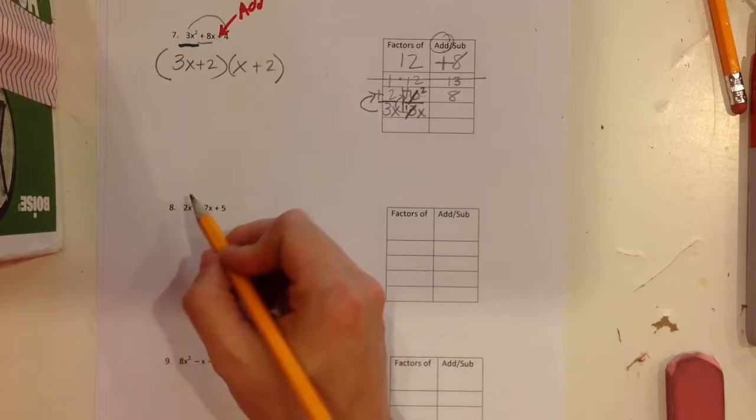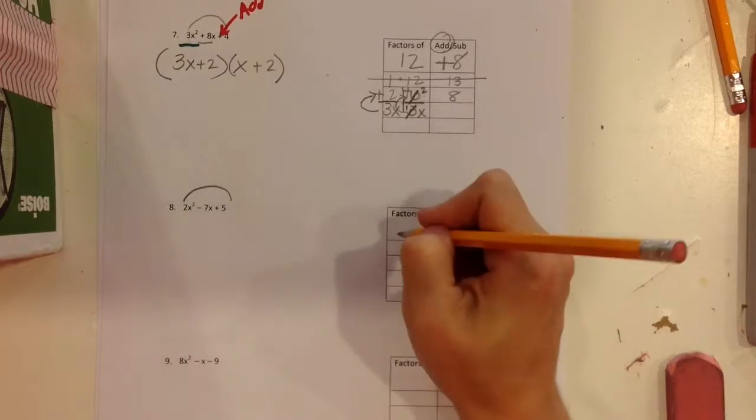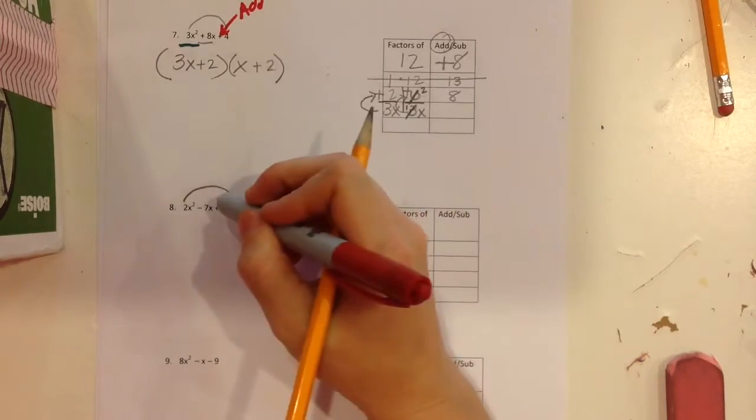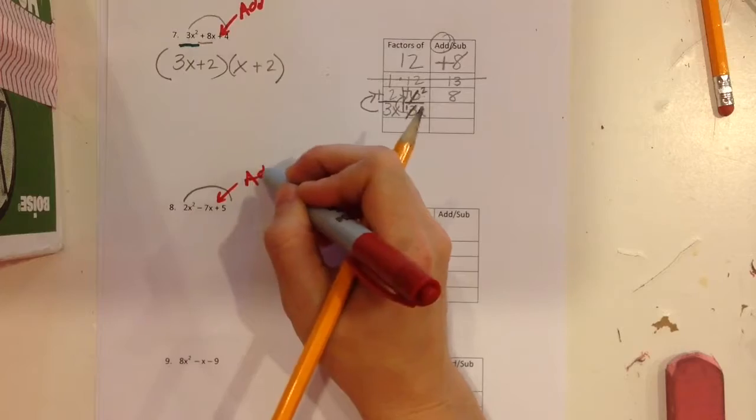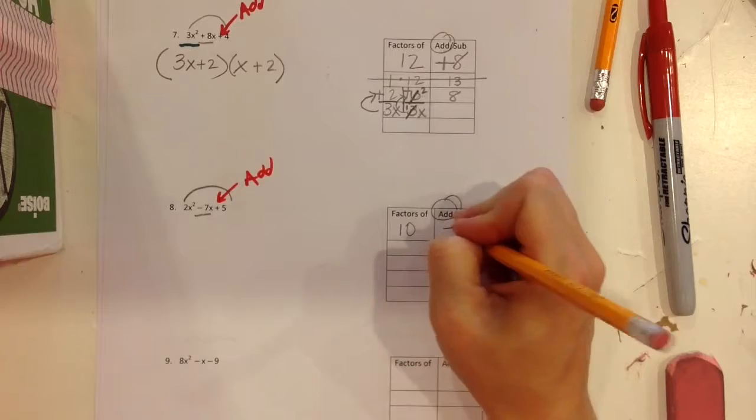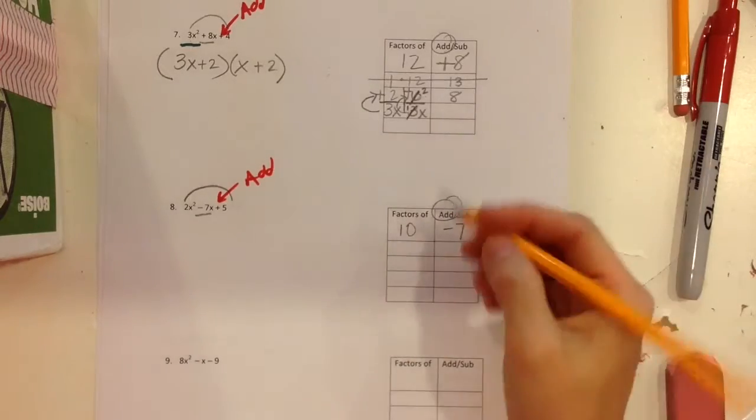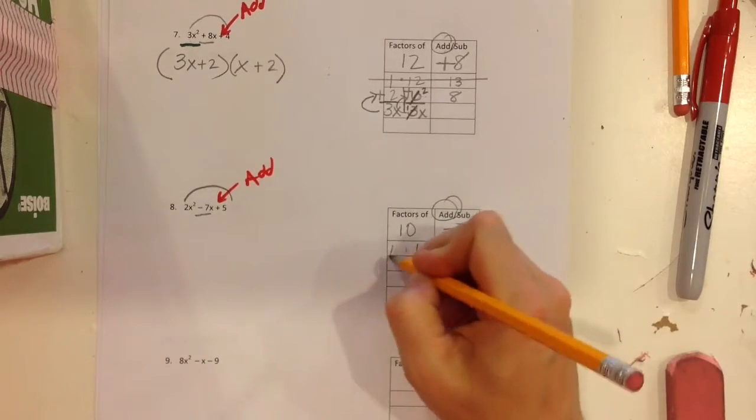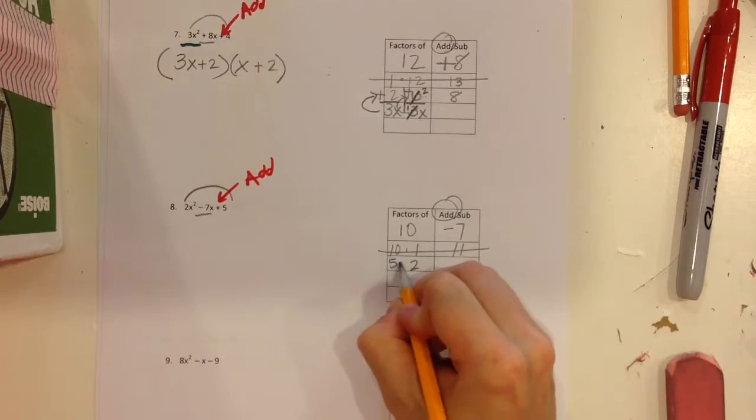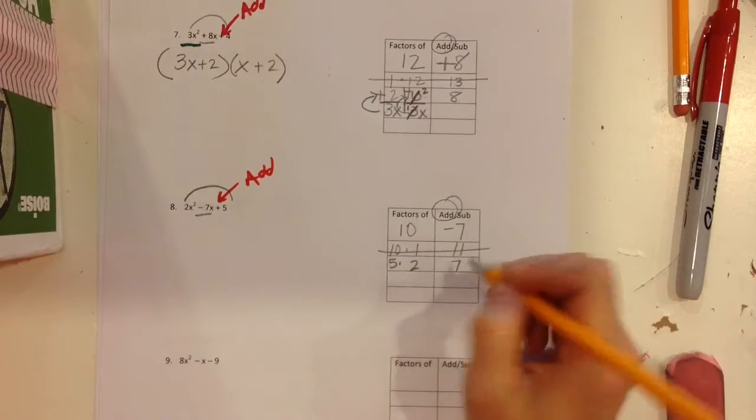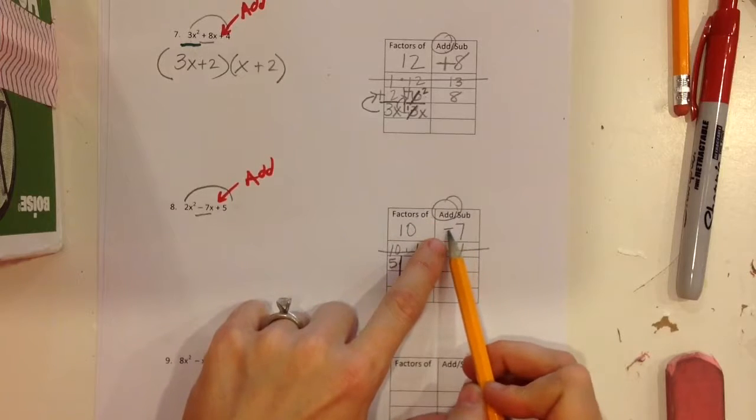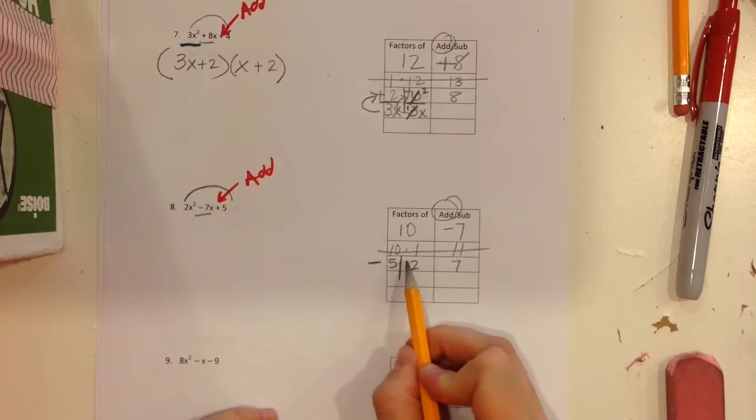Alright, so again we're doing our bottoms up. 2 times 5 is 10. So I want to find the factors of 10 that add to give me a negative 7. So we're adding to get a negative 7. So our factors of 10 are 1 and 10 and that adds to give me 11, that doesn't work. 2 and 5 will add to give me 7. Great. So since I'm adding, they both have to be the same sign and they both need to match that middle term. So they both need to be negative.